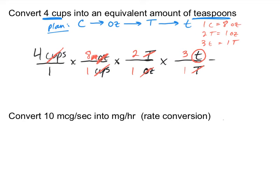Now the last thing is to multiply all the values. We have 4 over 1, 8 over 1, 2 over 1, and 3 over 1. All the denominators are 1s, so we just compute 4 times 8 times 2 times 3. That gives 192. The product of all denominators is 1, so the result is 192 teaspoons.